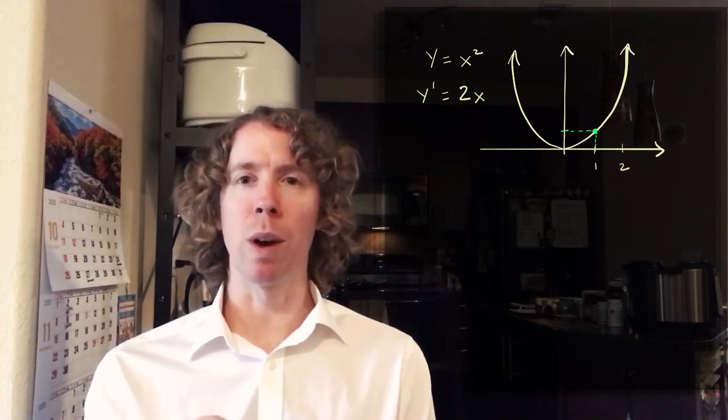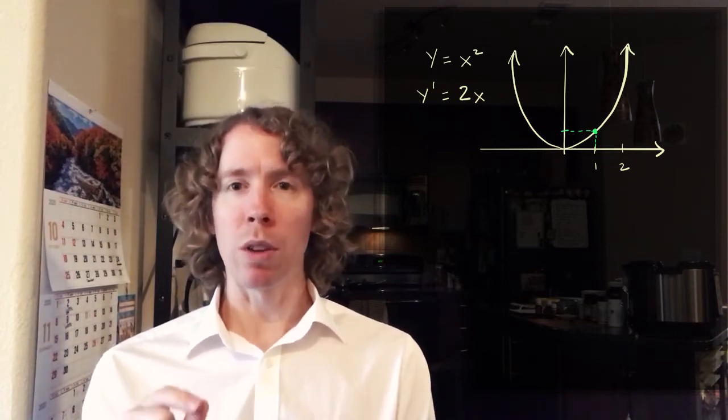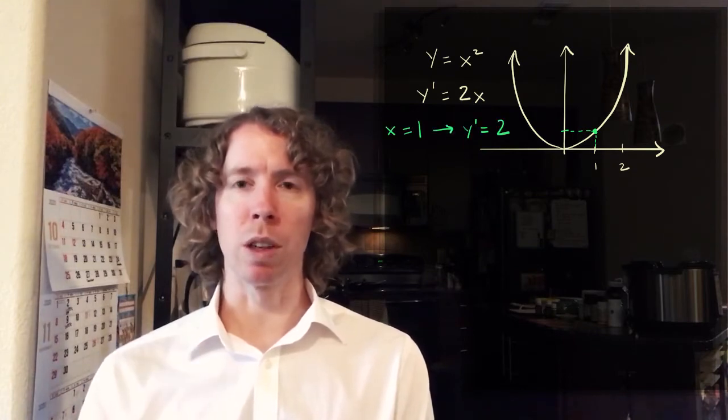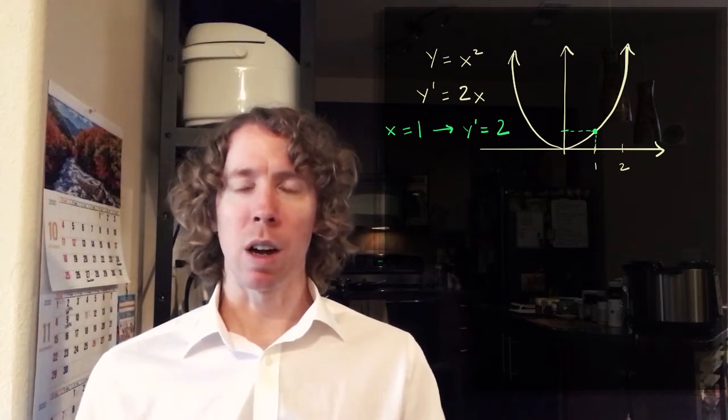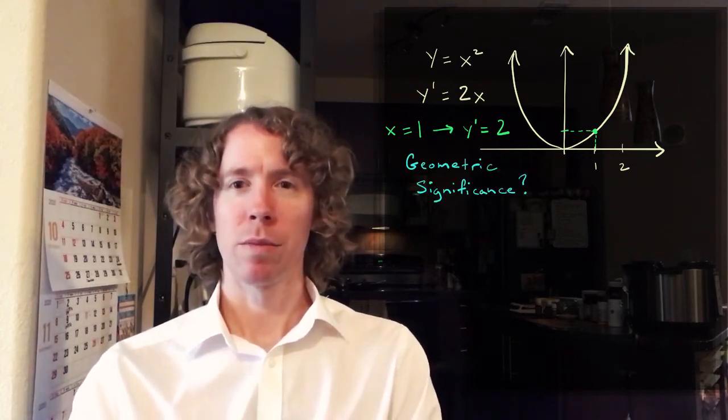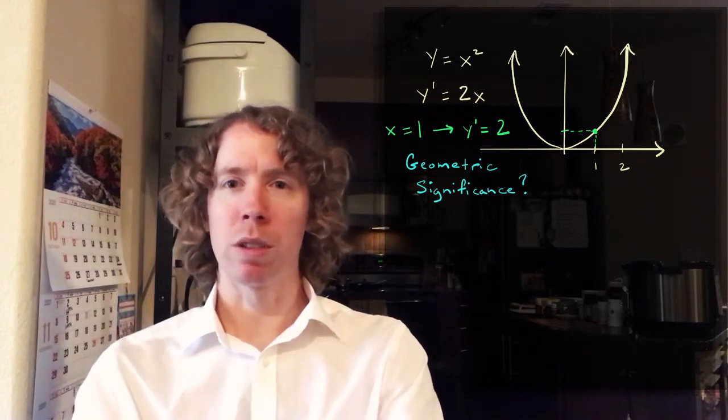So we said the derivative is two X. So at X equals one, the derivative is two. If you plug in X equals one, you get two times one. What does that represent on this graph? What could that possibly be measuring for us?